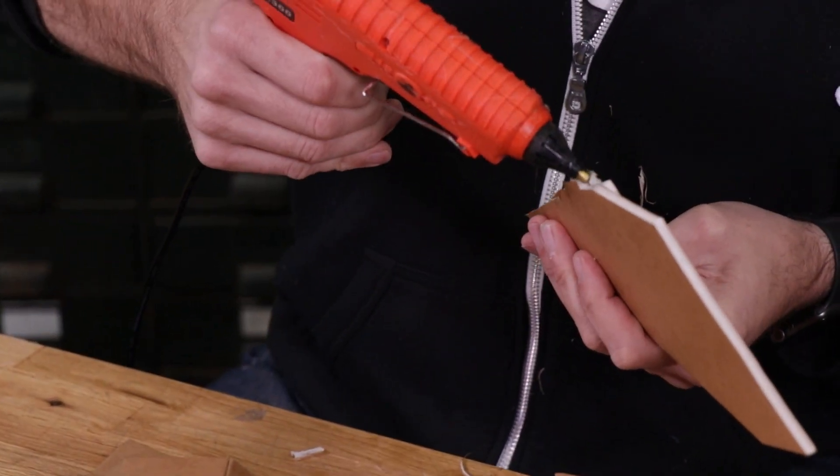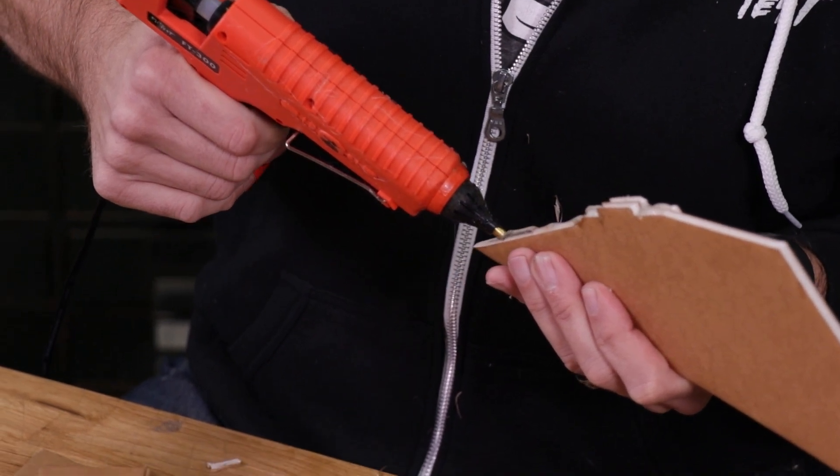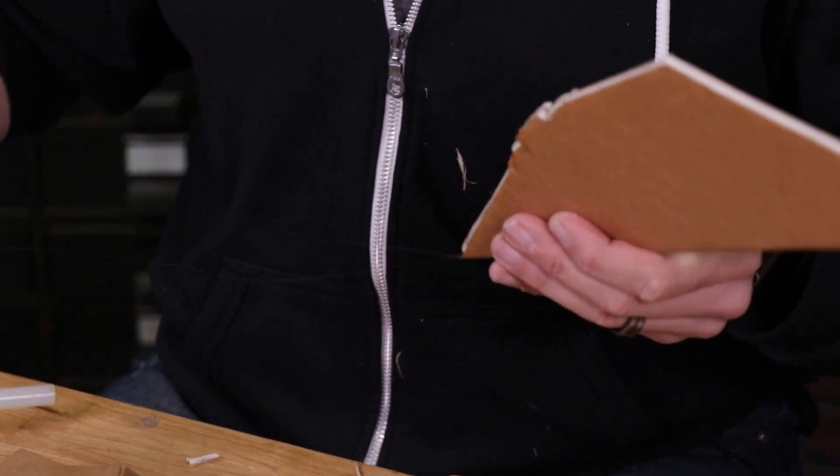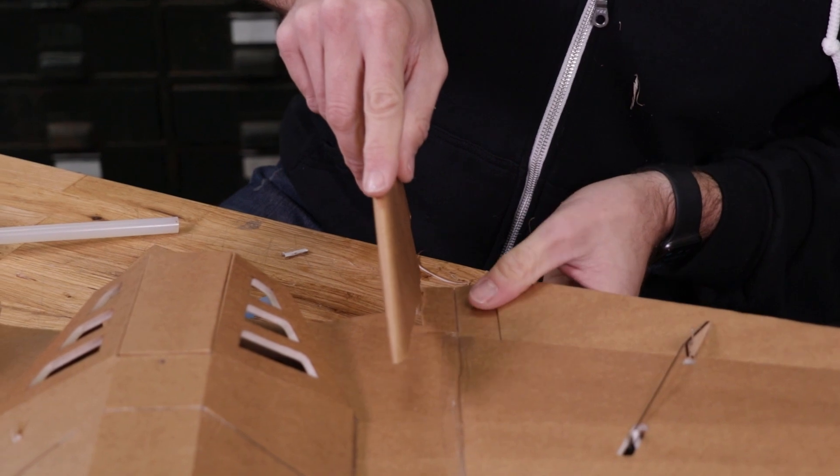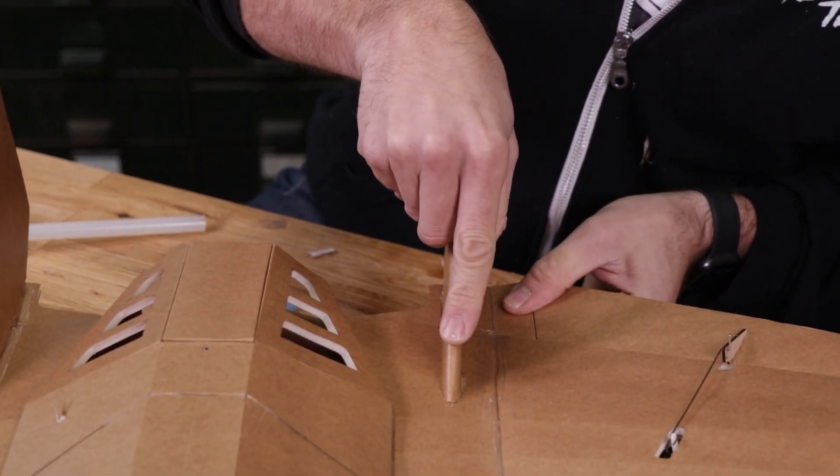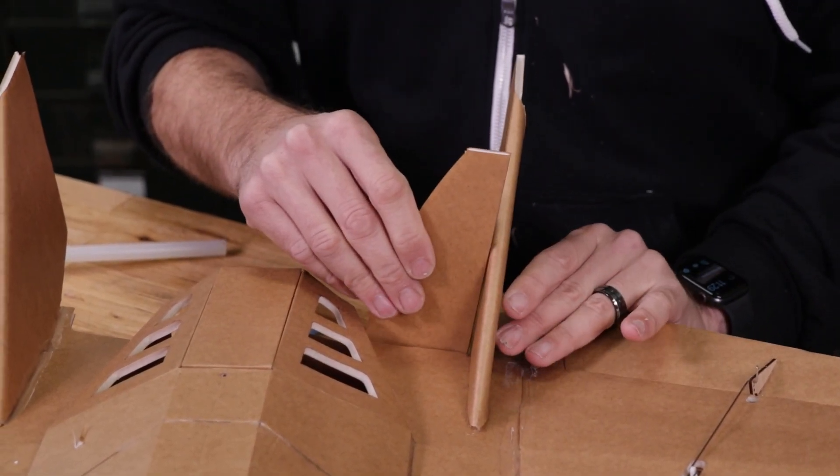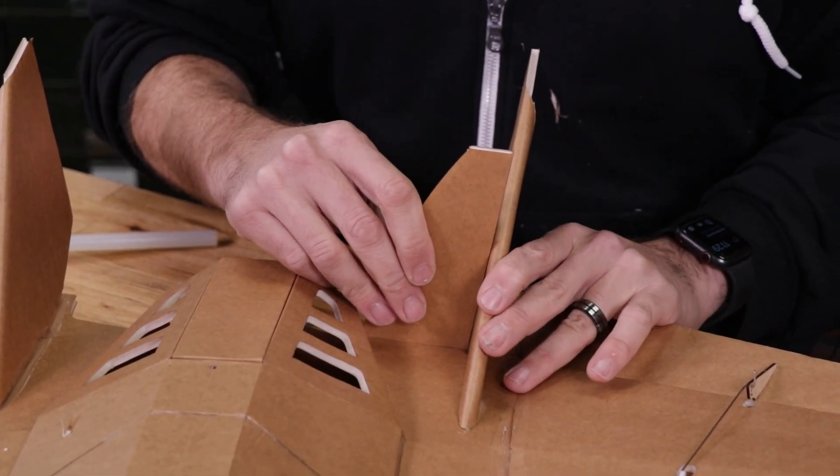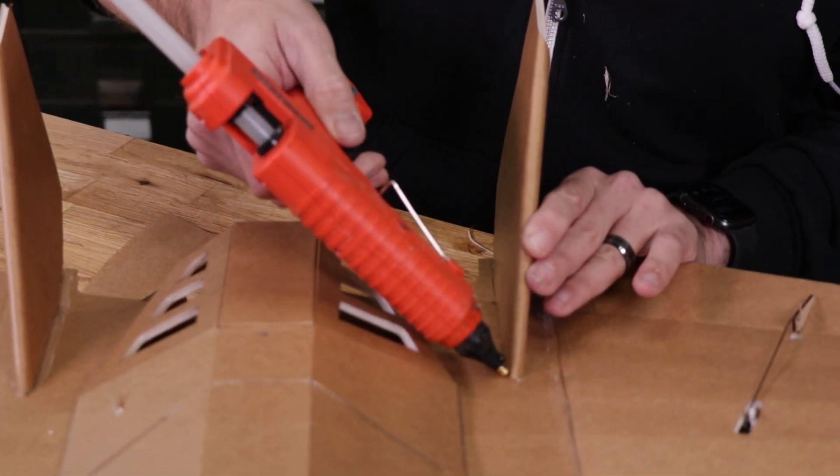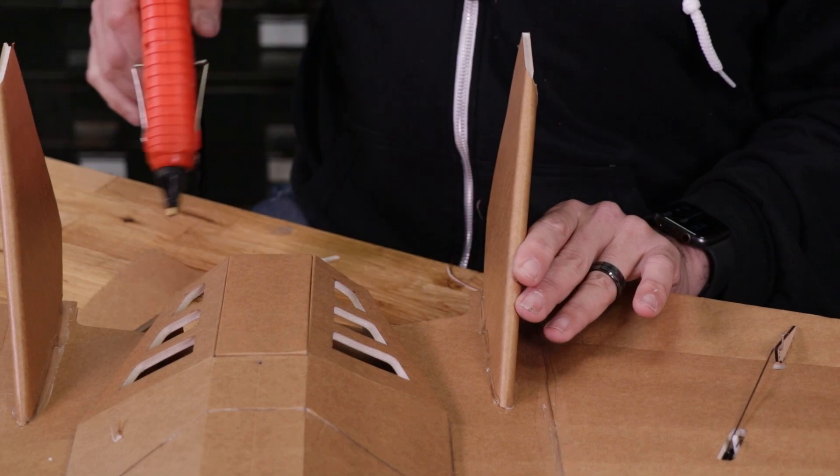And finally, a nice healthy bead of glue. Back down, lining the very leading edge of our elevator up with the dot that we made from our gauge. And then coming back with our little angle gauge to hold everything in place. And once everything's dried, come back with one final bead of glue just to lock everything in.